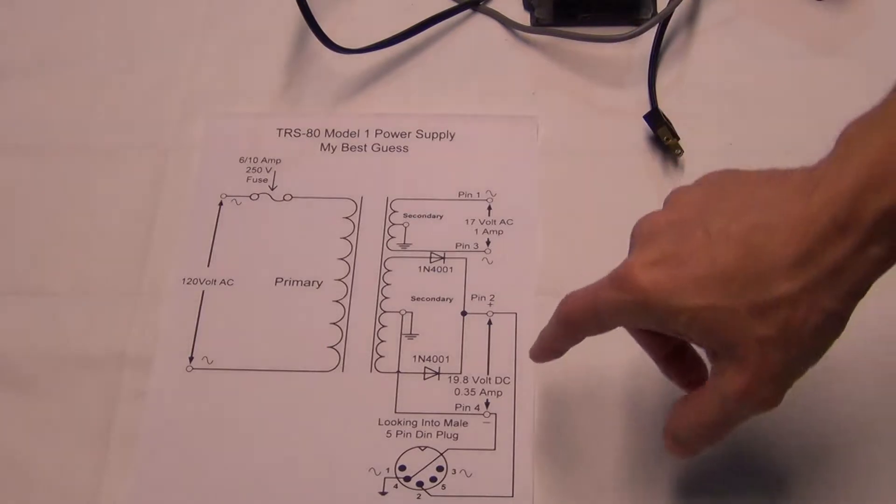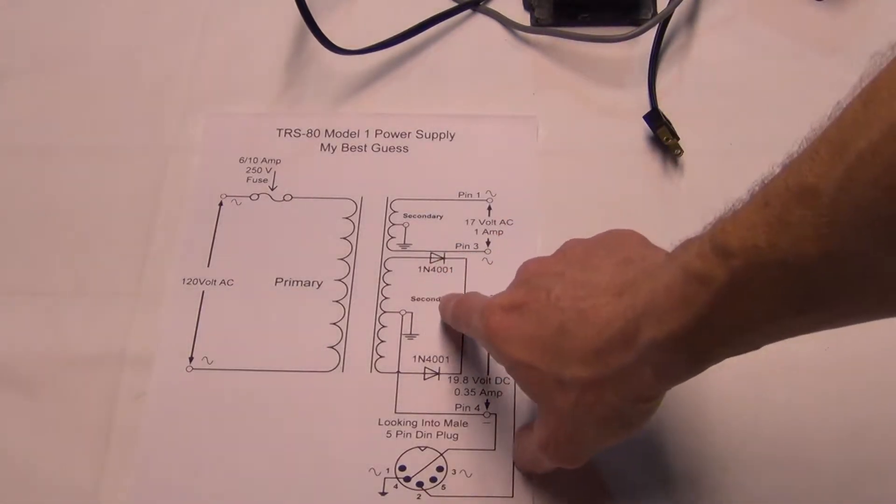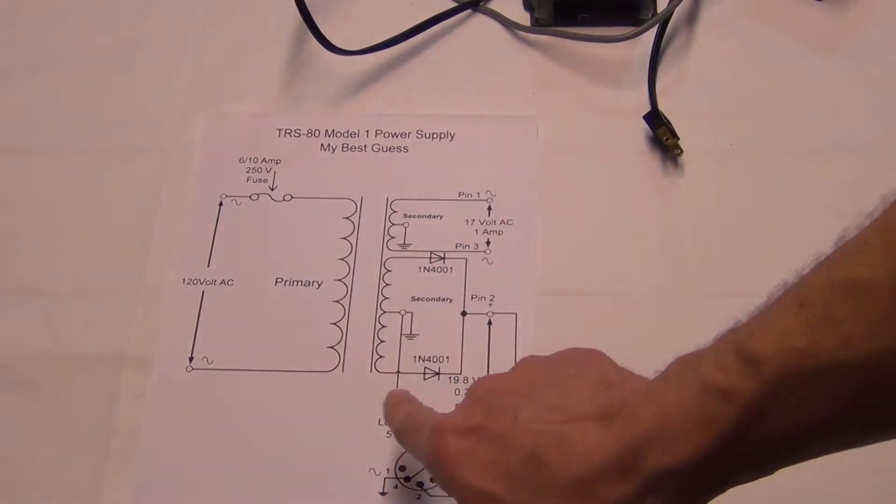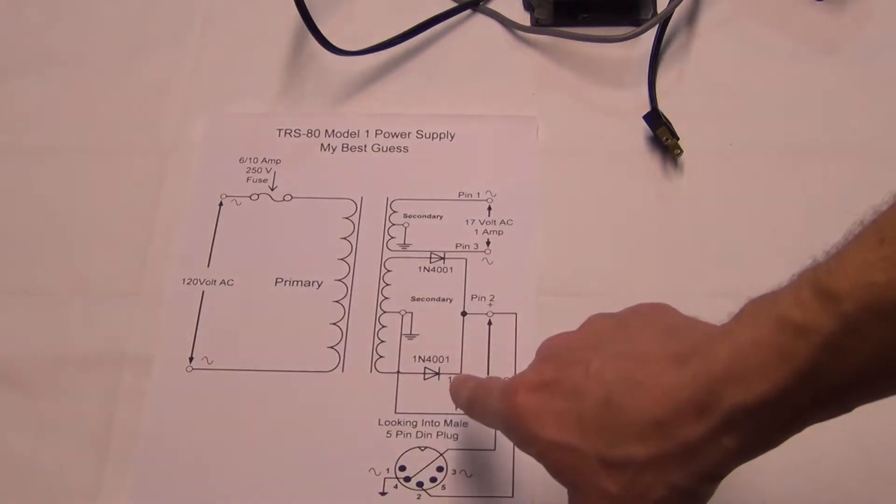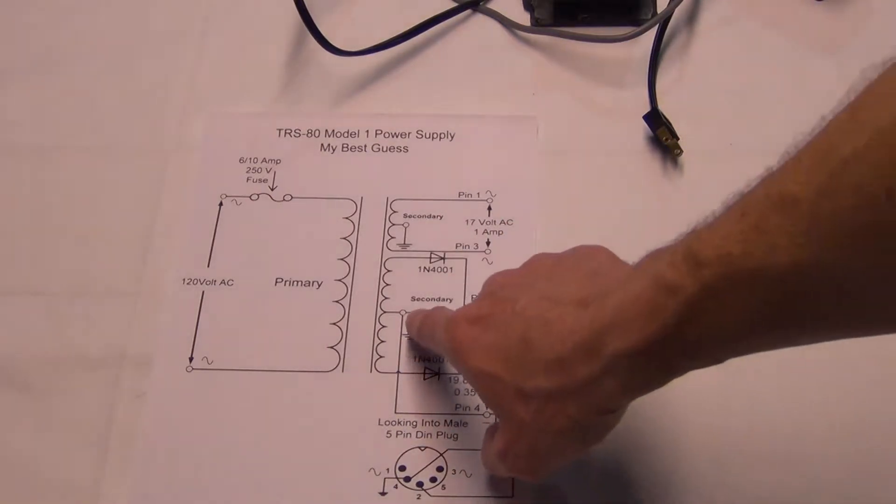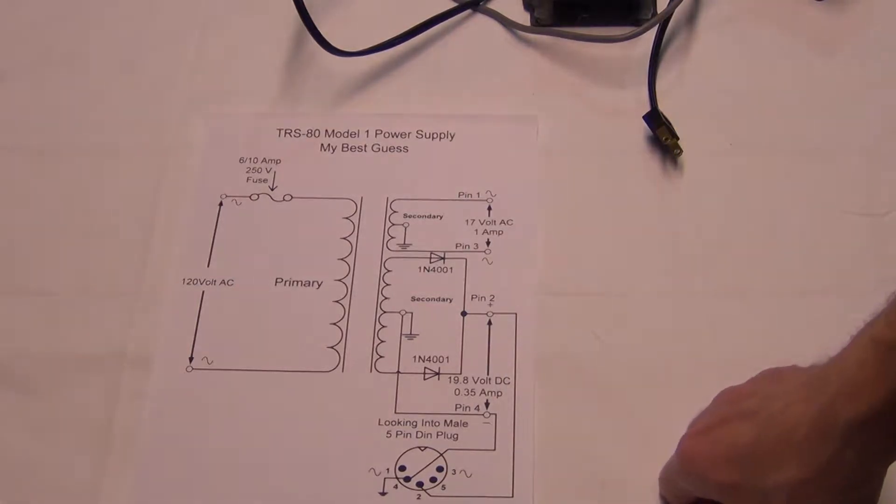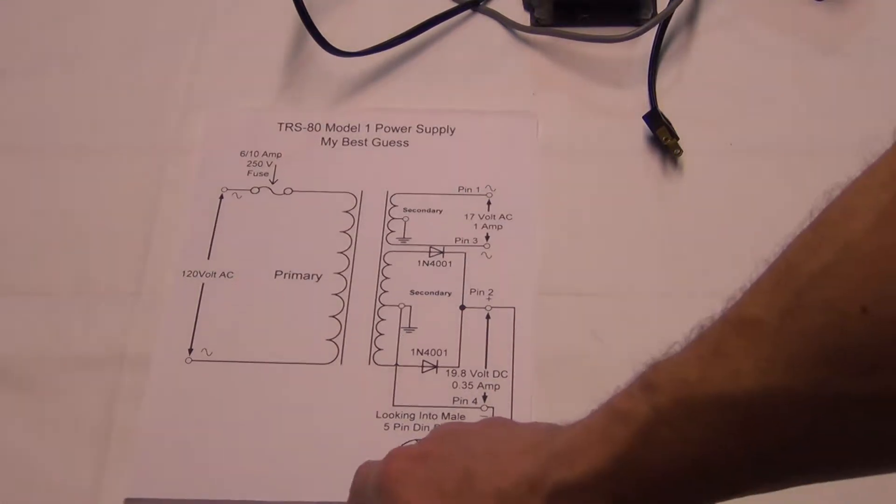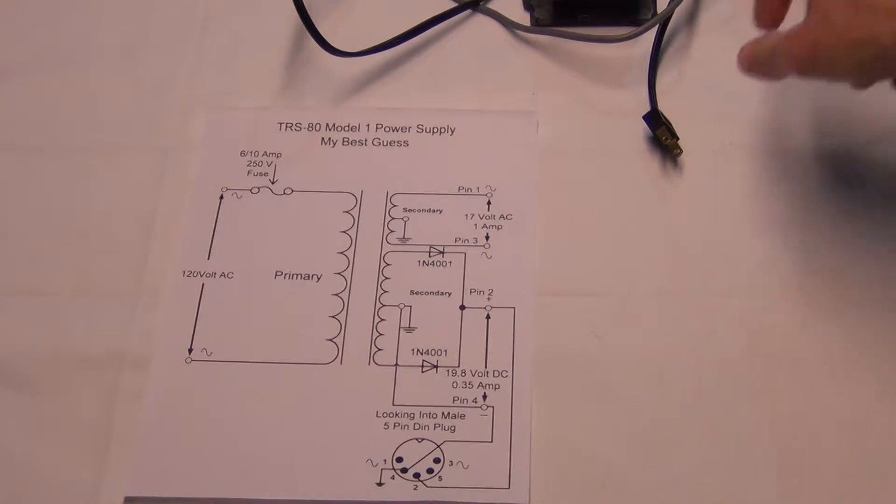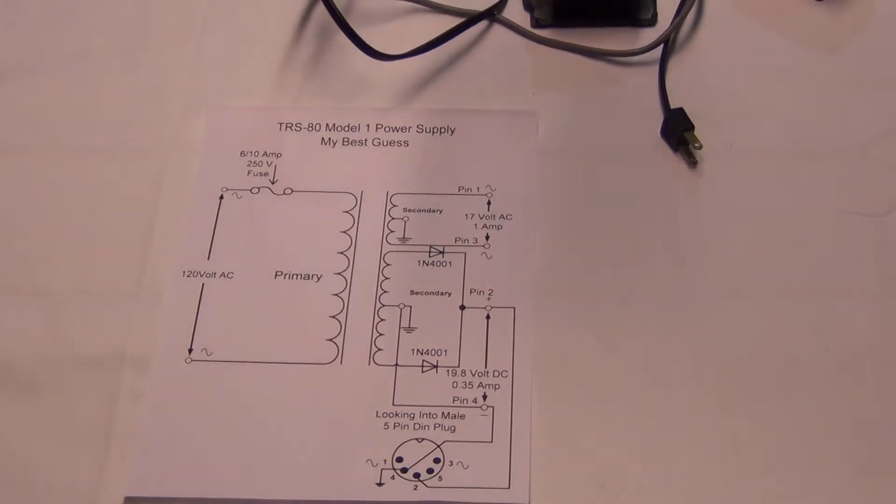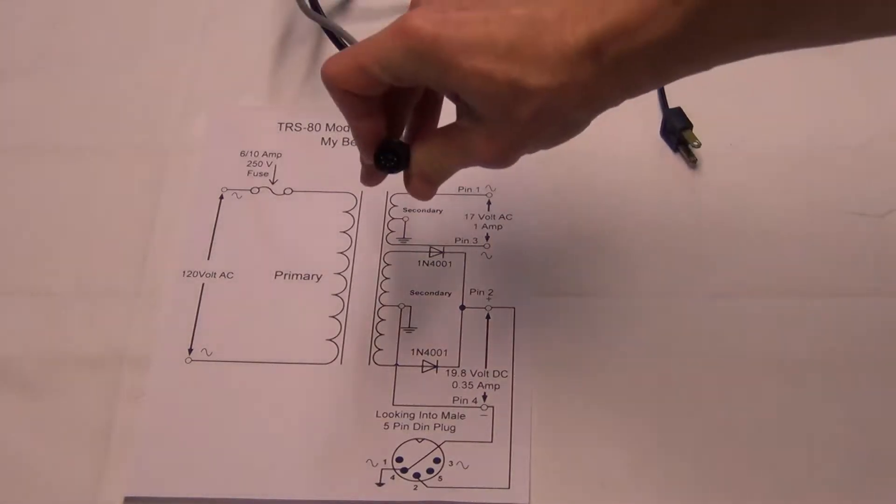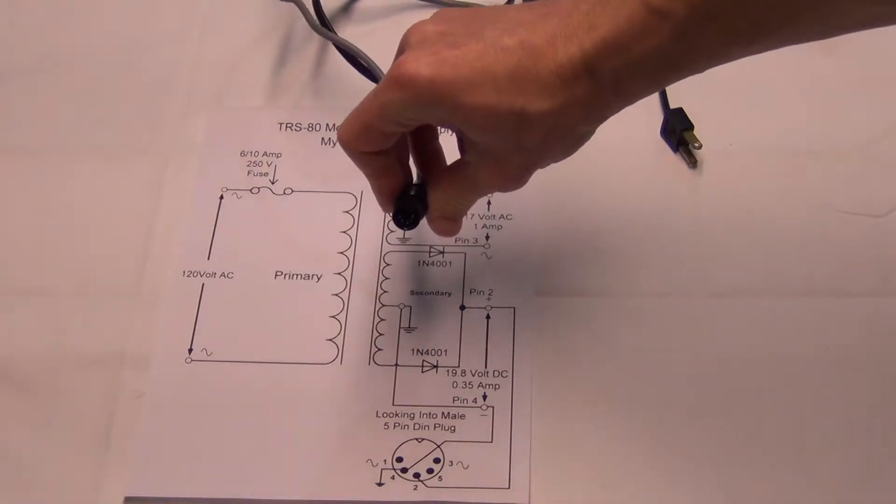And then the DC side, all it looks like they're doing is putting two diodes to rectify it. And then center tapping it, and that's it. That's how simple it is. And then this is just the pinout looking into this connector here.